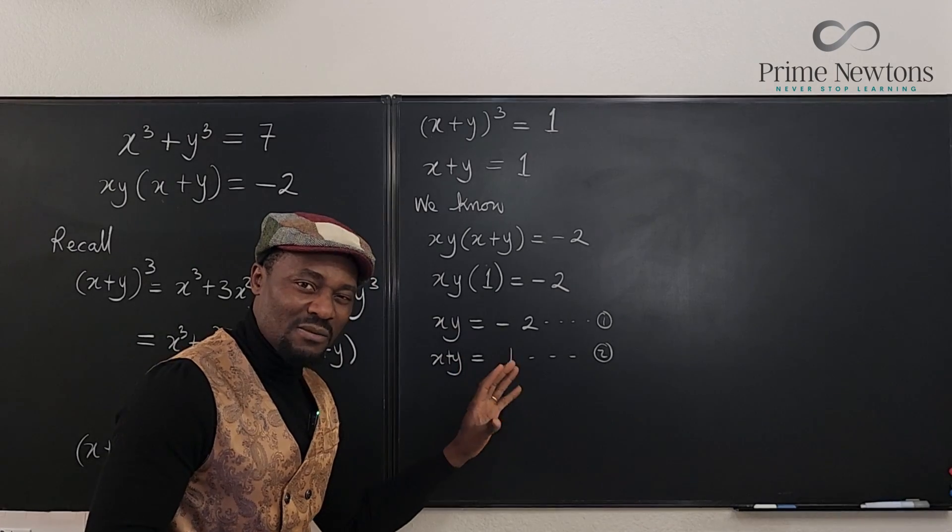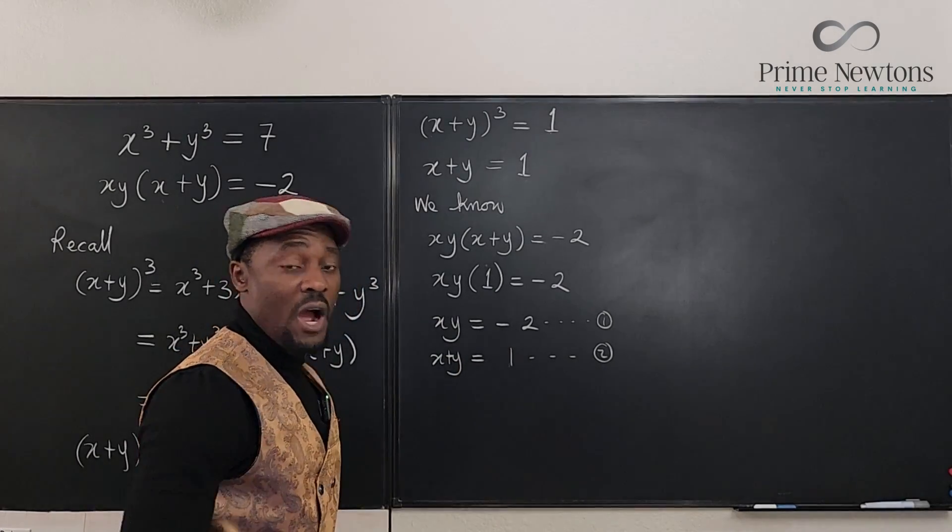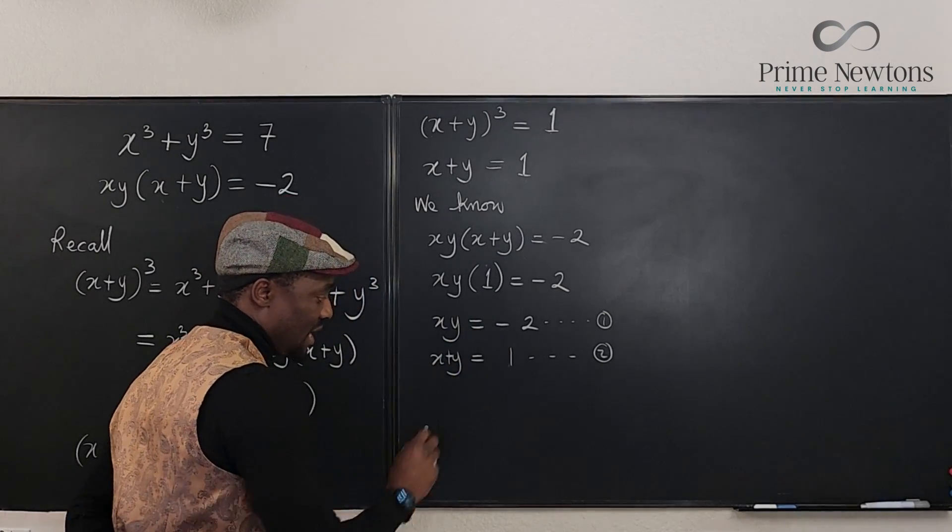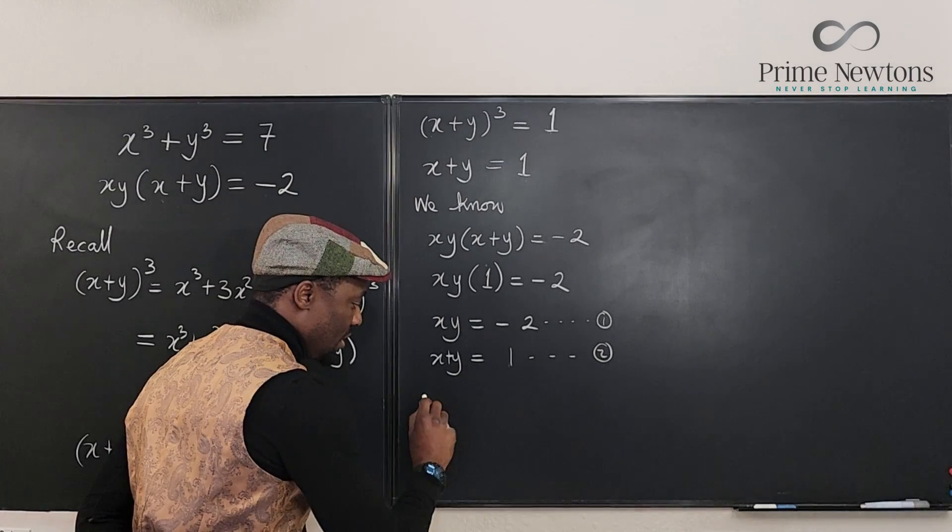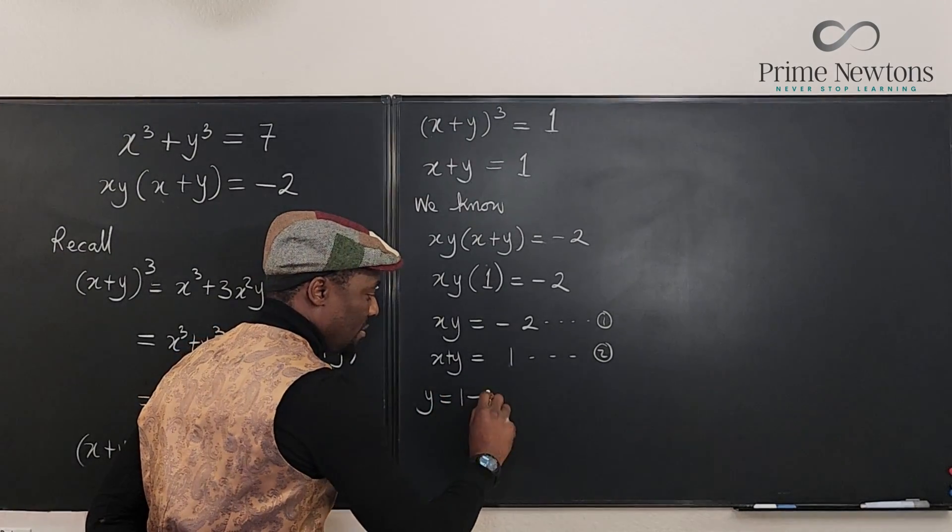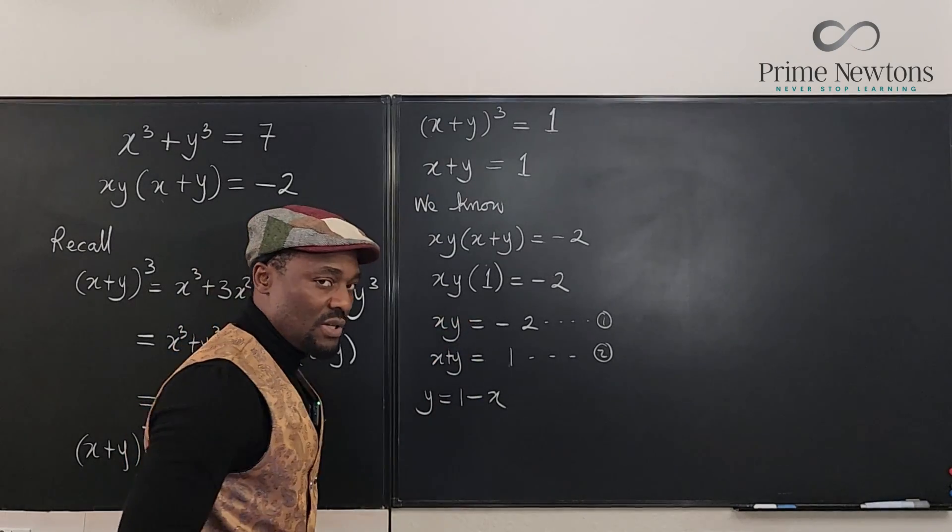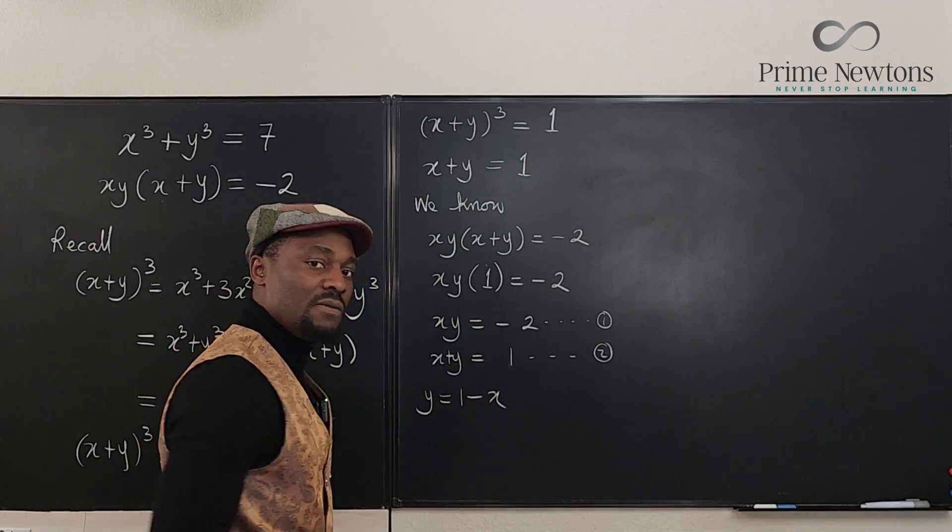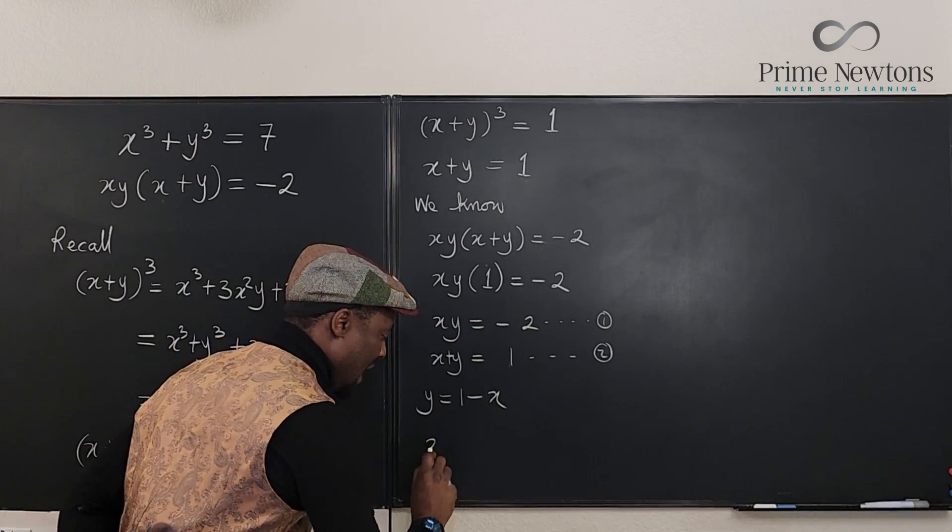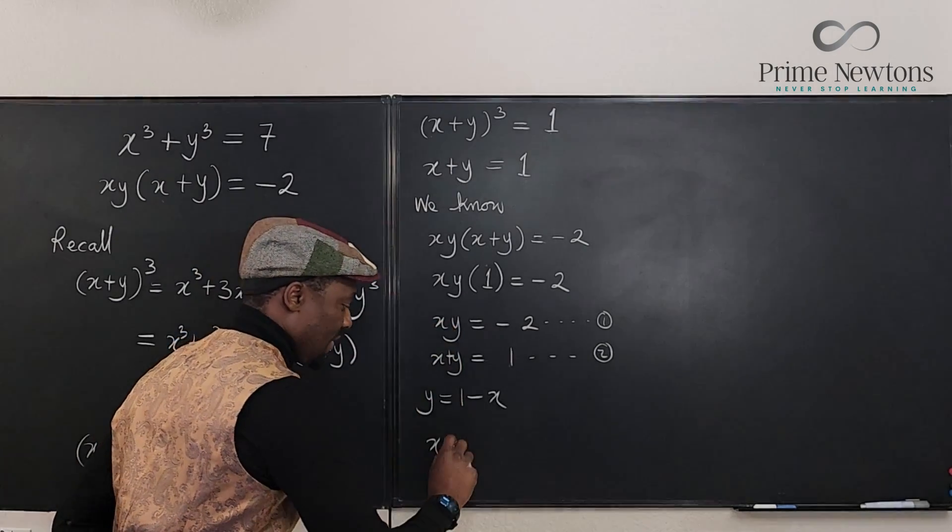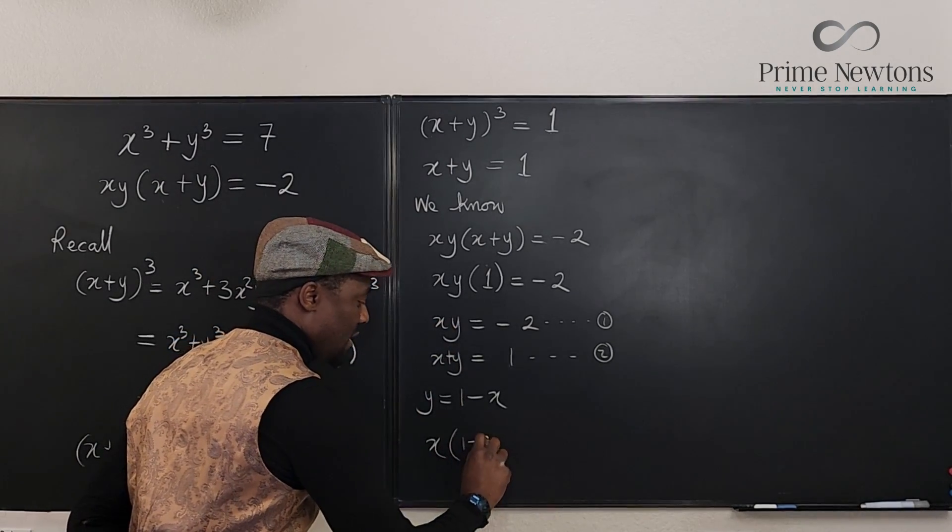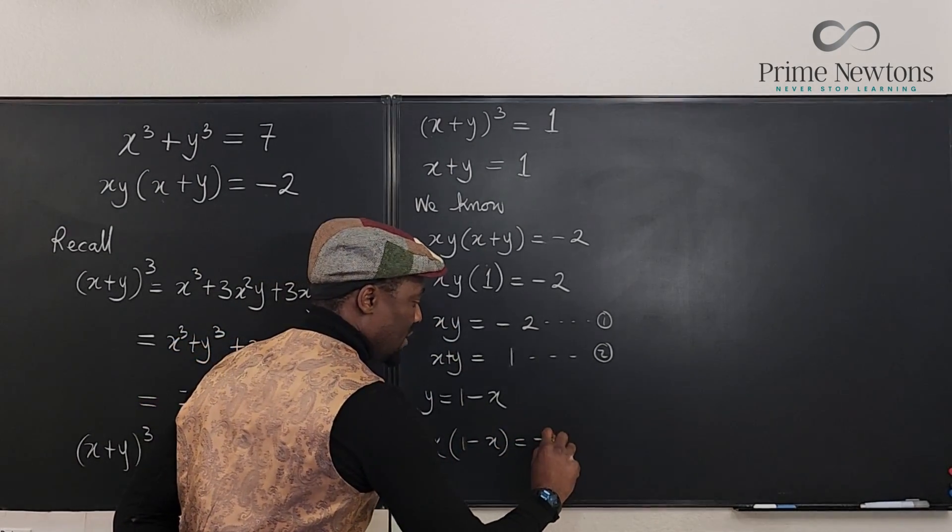Now, here we know what the answers are likely going to be, but let's just show how you get it. So in this case, I'm going to say from here, y equals 1 minus x from this equation. And I'm going to go to the first equation and plug in 1 minus x for y. So I know that x from this equation times y, which is 1 minus x, will be minus 2.